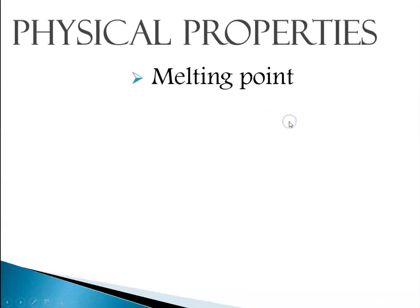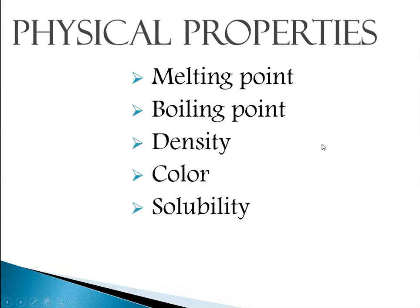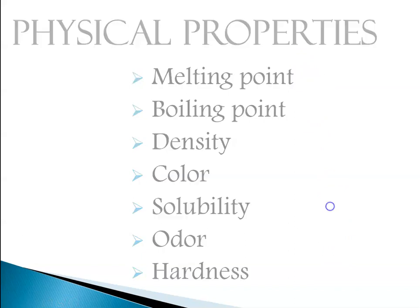Physical property examples: melting point, boiling point, density, color, solubility — that's the ability to dissolve — odor, and hardness. All of these are physical properties. They can be measured or observed without changing the identity of the substance.